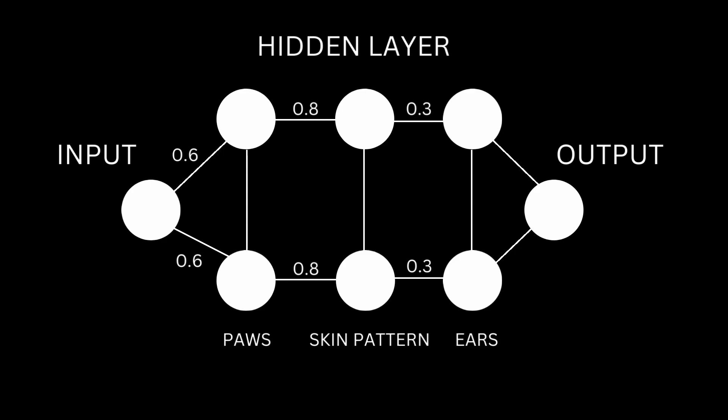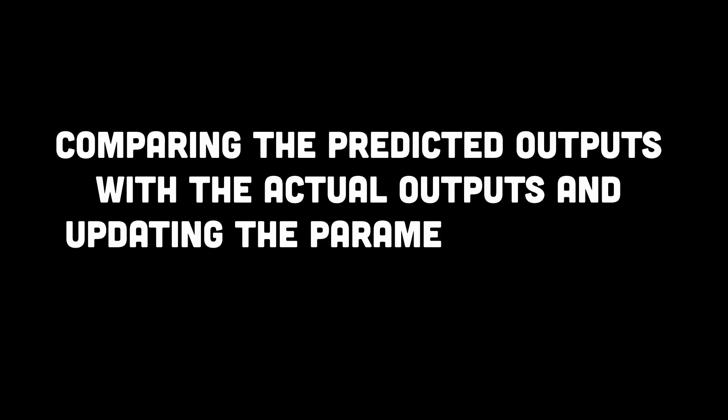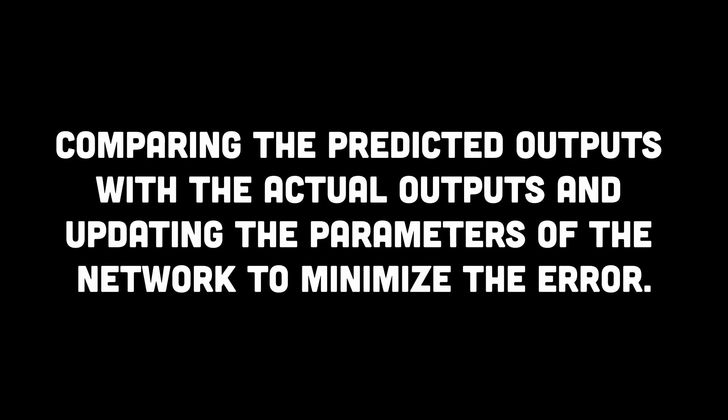This adjusting of weights is done through a process called backpropagation, which involves comparing the predicted outputs with the actual outputs and updating the parameters of the network to minimize the error. This process of optimization can take a very long time.